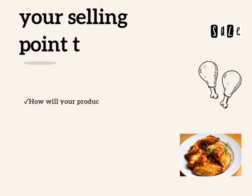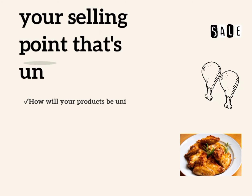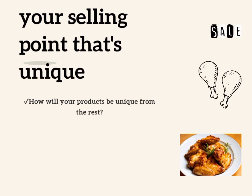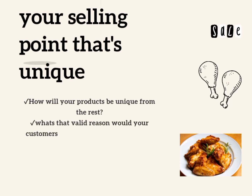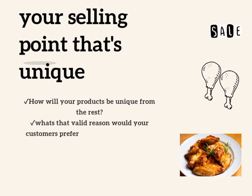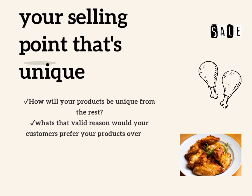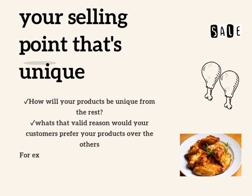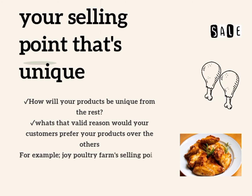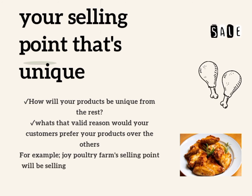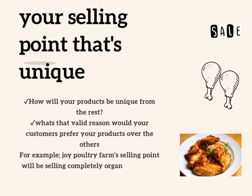Your selling point — that's what makes you unique. The questions here are: how will your products be one of a kind from the rest? What's the valid reason your customers prefer your products over others? For example, Joy Poultry Farm's selling point will be selling completely organic chickens — that's a selling point.